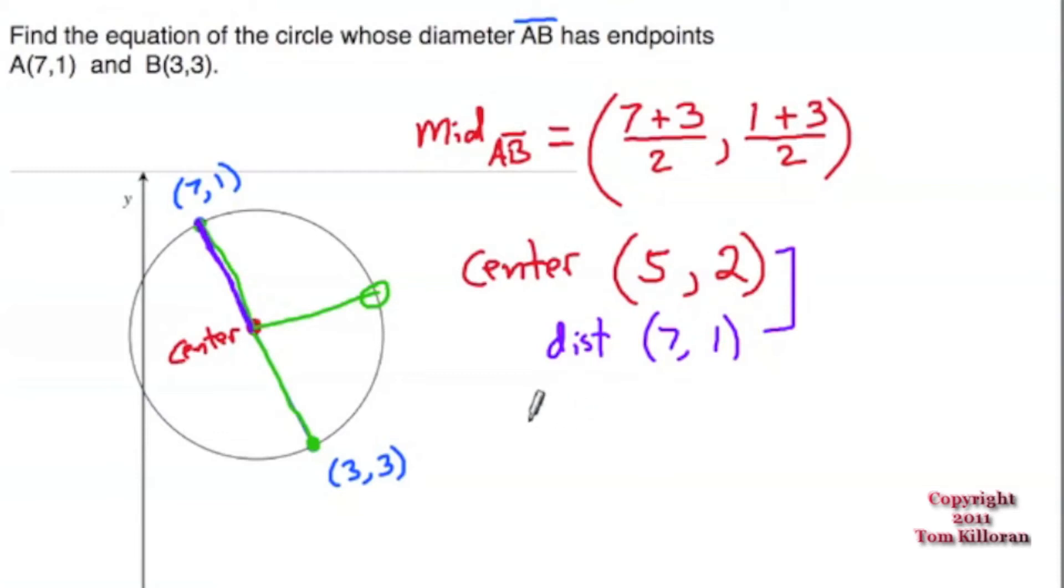To find the distance we can use the distance formula. Distance equals the square root of the change in x squared. So either 5 minus 7 or 7 minus 5 - I'll go center to the edge of the circle. Square it, plus since I started 5 to 7, I'll go 2 to 1, so 2 minus 1 all squared. The distance from the center to the edge of the circle, we could really replace that with radius. So the radius of this circle is going to equal the square root of negative 2 squared, which is 4, and positive 1 squared, which is 1. So the radius of this circle is the square root of 5.